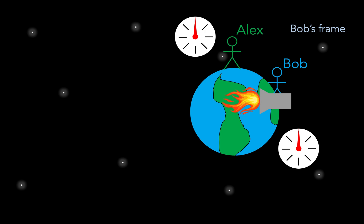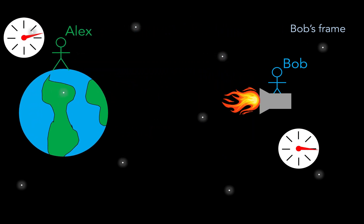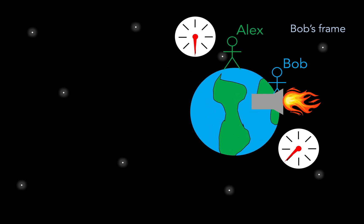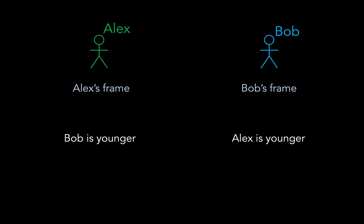But remember that time dilation happens both ways. So we can also see how things play out in Bob's reference frame. And here, according to Bob, it is Alex that shoots off, along with the Earth, then turns around and comes back. So according to Bob, it is actually Alex that is younger. So according to Bob, Alex is younger, and according to Alex, Bob is younger. But how can they both be right? Well, it looks like we have a paradox in our hands.